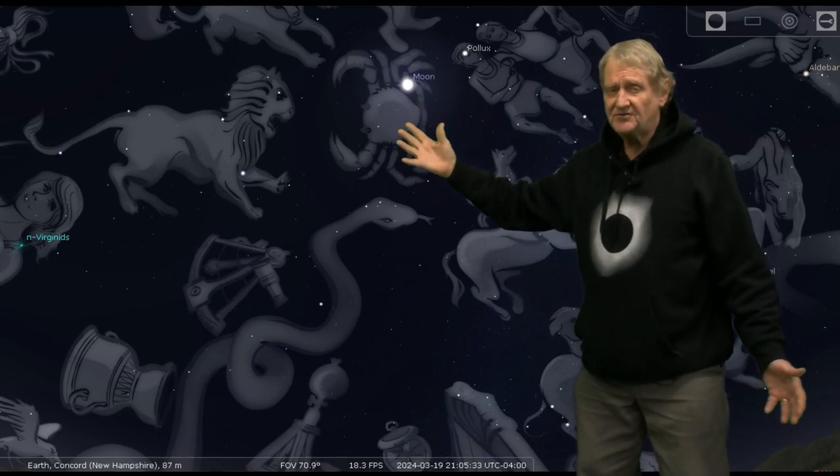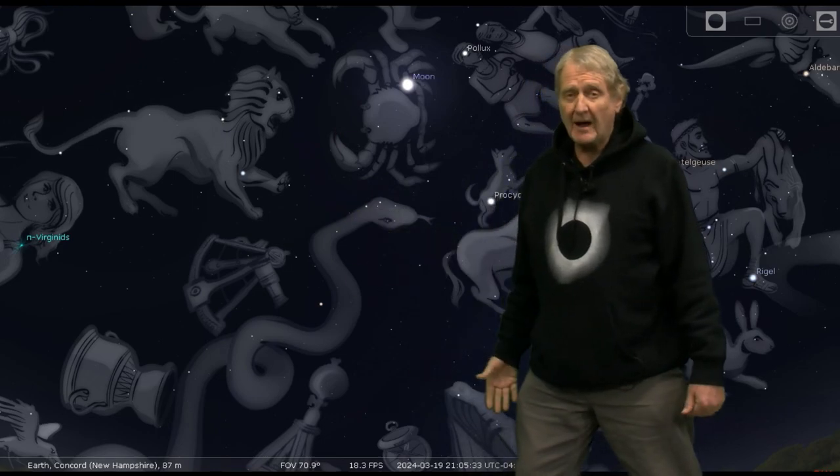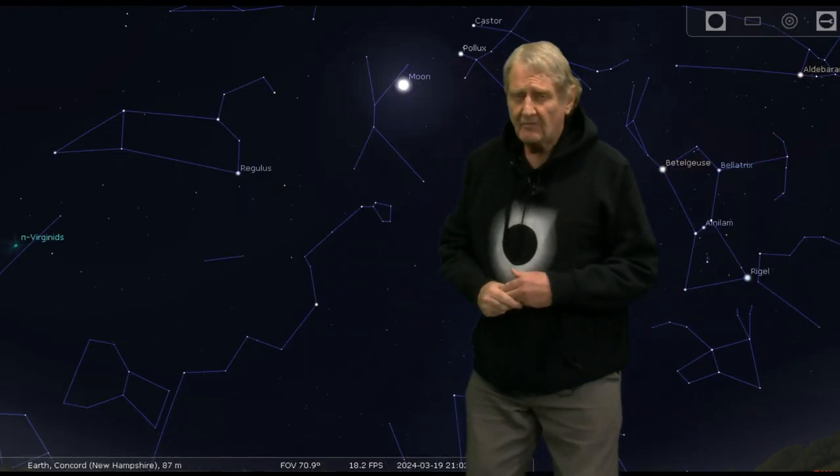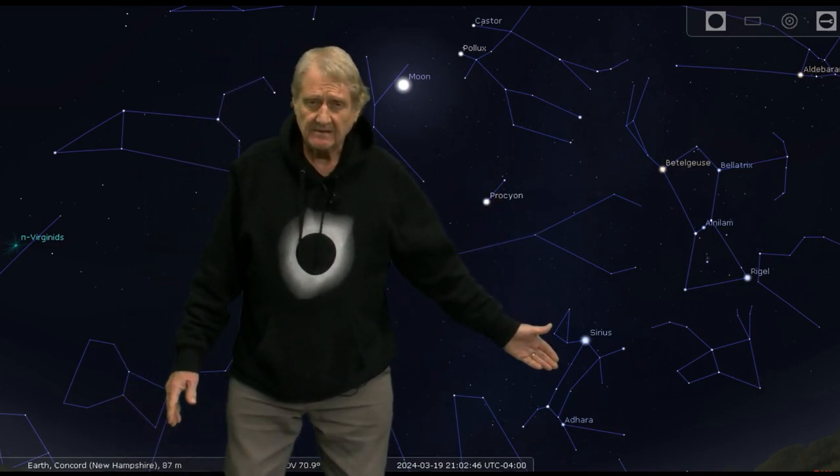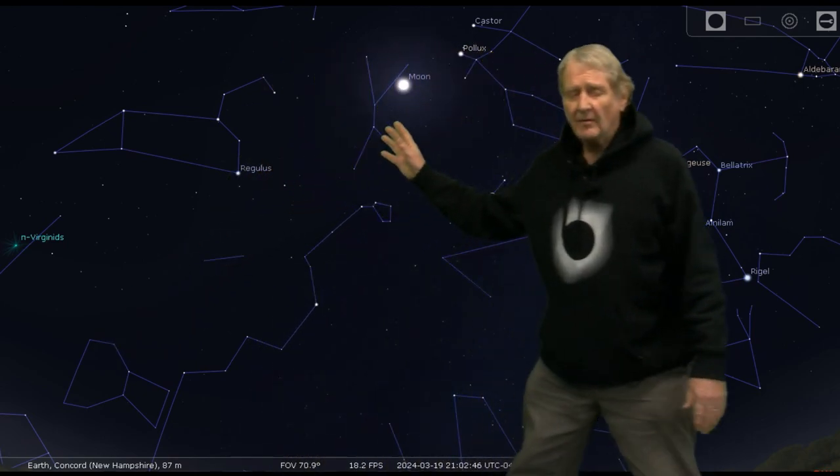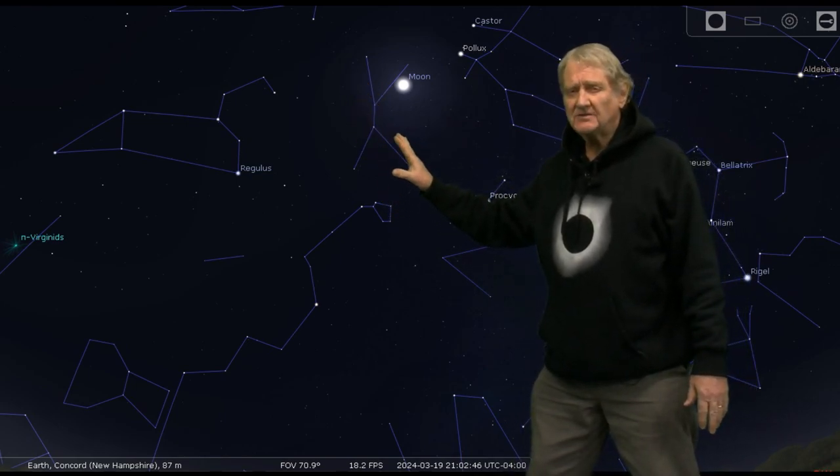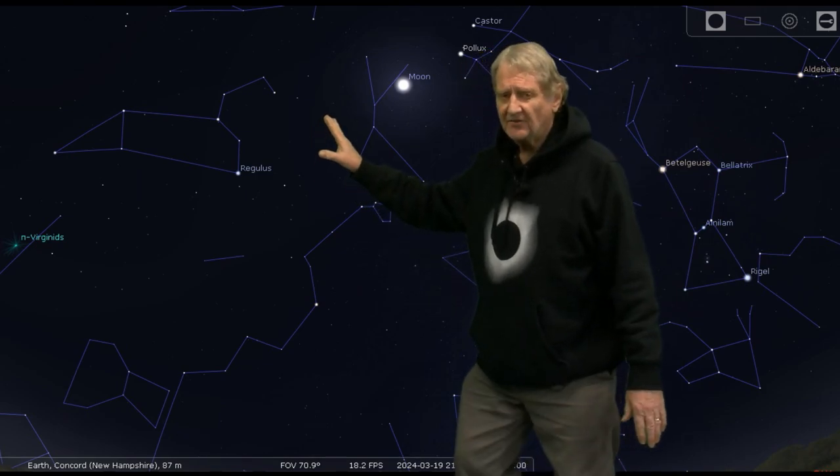If we bring up the artwork, it'll make a little more sense. You can see the lion here, and then between the twins Castor and Pollux is Cancer the Crab, and that's where the moon is going to be in Cancer the Crab on March 19th. The moon moves each night from west to east, so the next night it's going to be making its way towards the mouth of the lion, March 20th, then 21st.